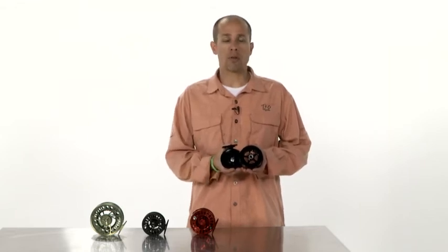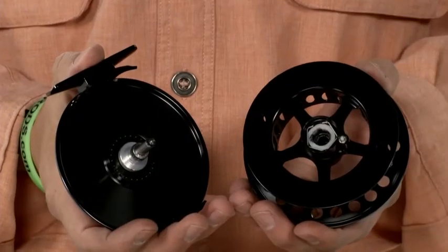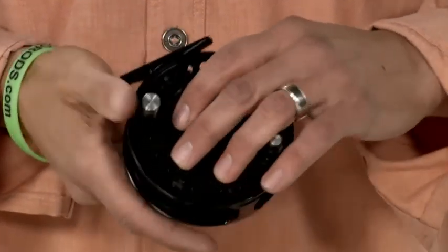You can remove the wire spring, flip over the clutch bearing and change the direction of the drag system. If you have further questions you can refer back to the video on the BVK reel.